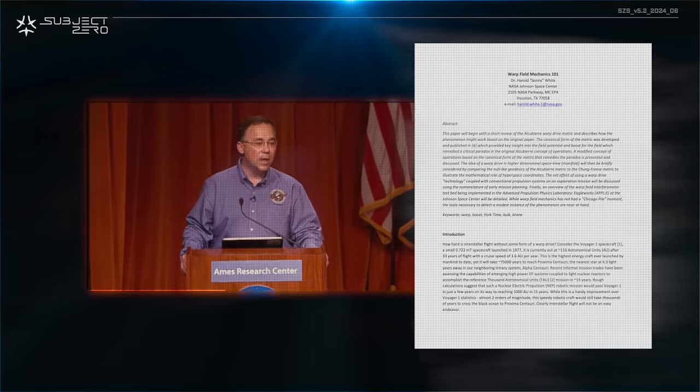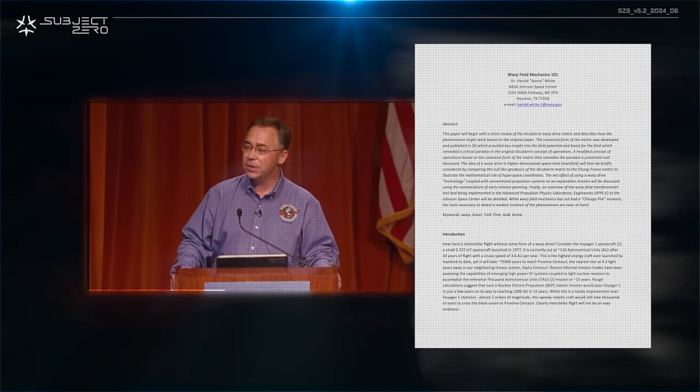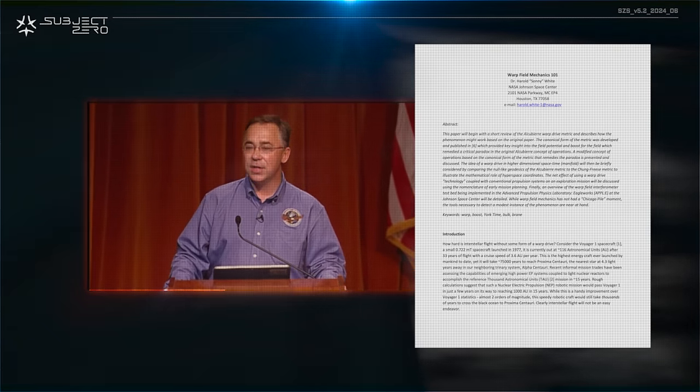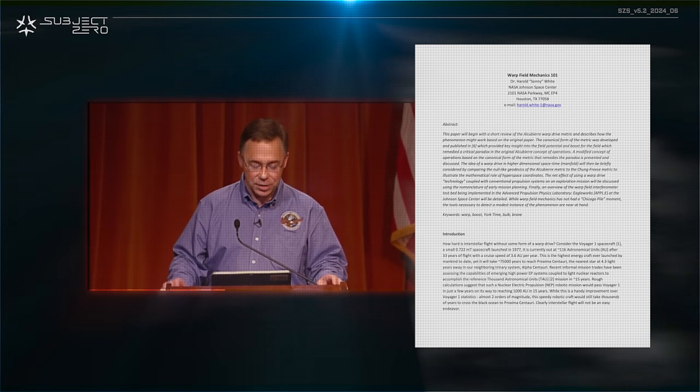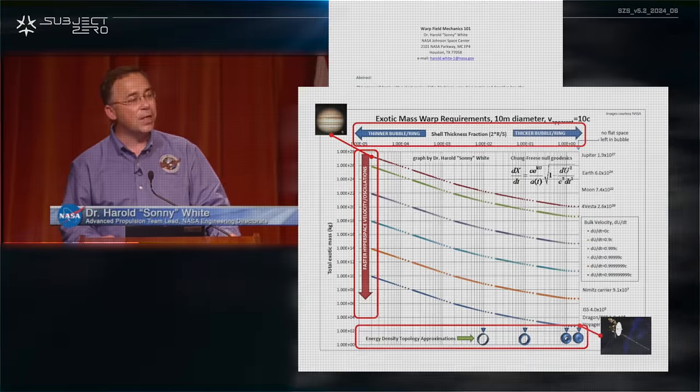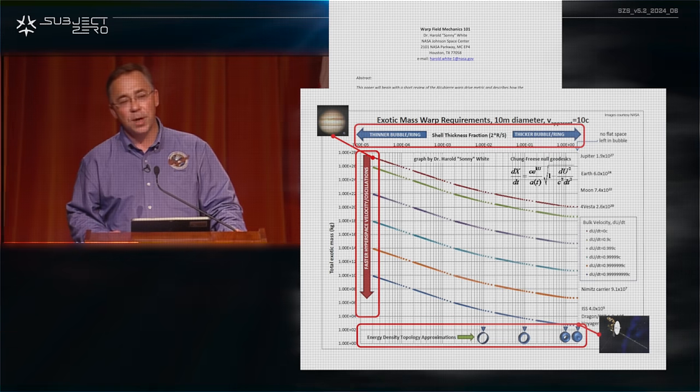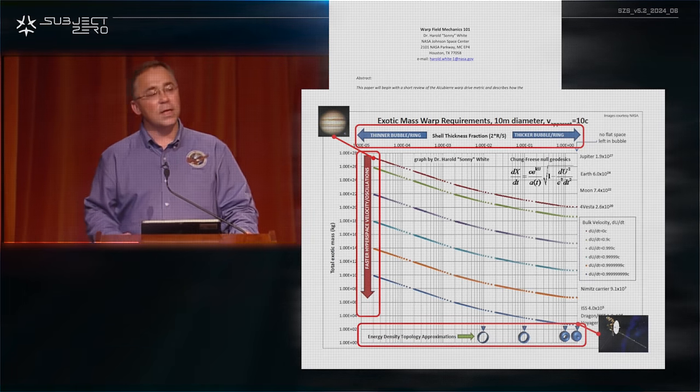White and his team investigated the theoretical principles behind the warp drive and explored potential methods for realizing it. In 2011, his first major report was delivered with a complete revision of the Alcubierre concept in a peer-reviewed paper titled Warp Field Mechanics 101. He was able to optimize energy requirements and bring the number down from Jupiter's mass to that of Voyager 1.